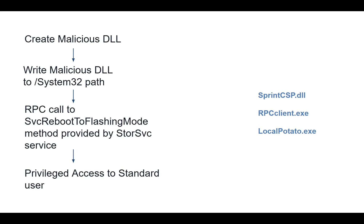We will make an RPC call to the StoreSvc service's FlashingMode method. Whenever we call this service, it will trigger the malicious DLL we placed in the System32 path. We can only write the file to System32 using Local Potato, but we cannot execute it directly — so we write the DLL and execute it through the legitimate RPC executable.